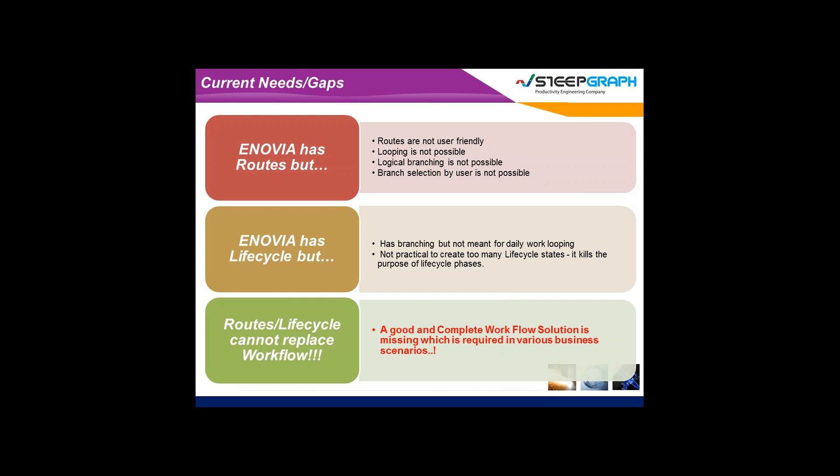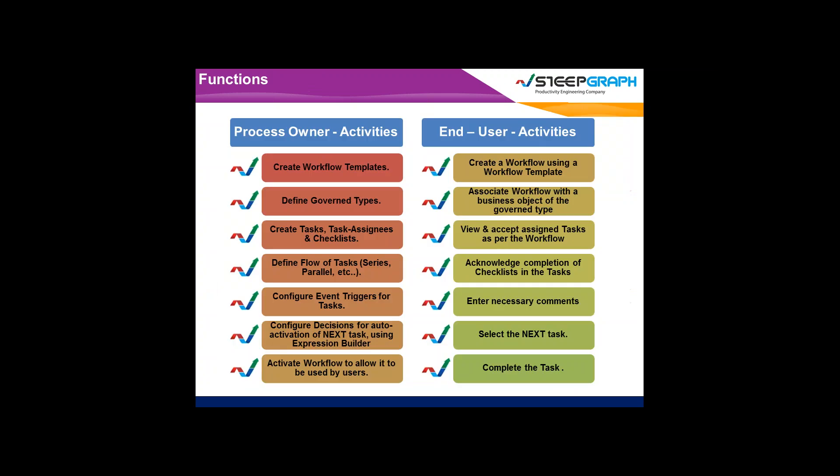Anuvia has life cycles; however, the life cycle is meant to manage an object state — it is not meant for business process management, as it cannot do looping and so on. Effectively, there is no effective way in Anuvia to quickly configure, implement, and roll out a business process.